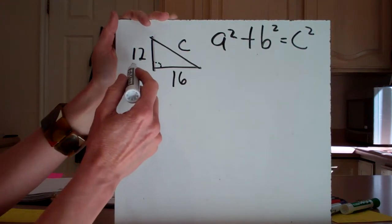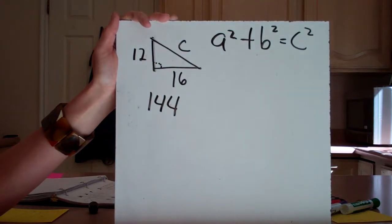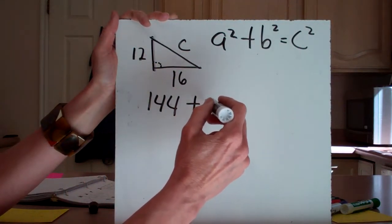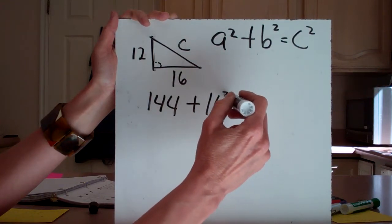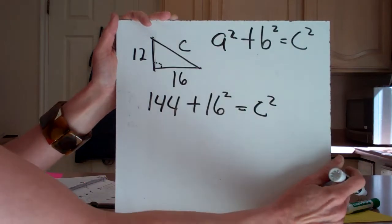Most of us know that 12 times 12 is 144, so A squared would be 144. But most of us don't memorize our 16 times tables, so let's use our calculator.